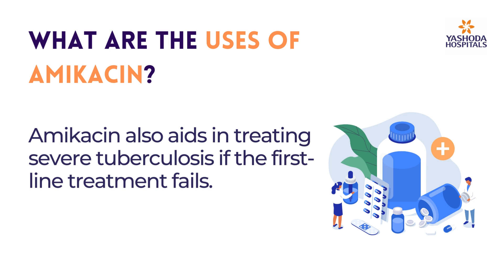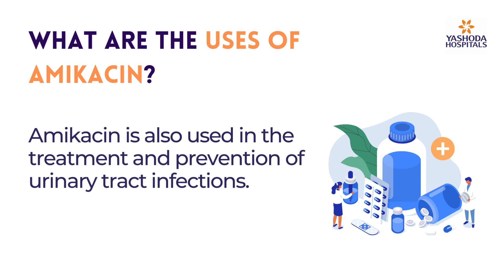Amikacin also aids in treating severe tuberculosis if the first-line treatment fails. It is also used in the treatment and prevention of urinary tract infections.